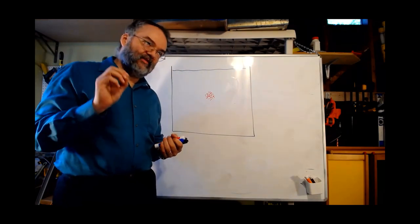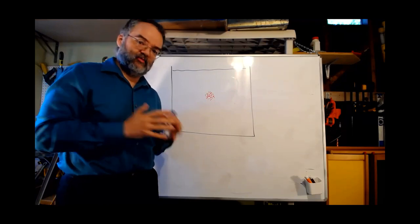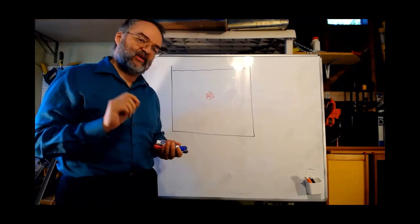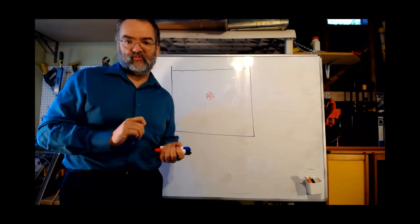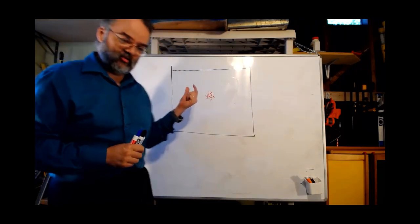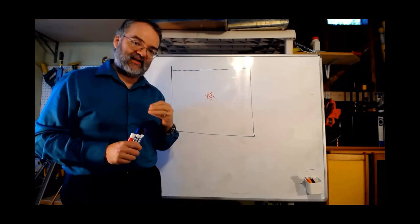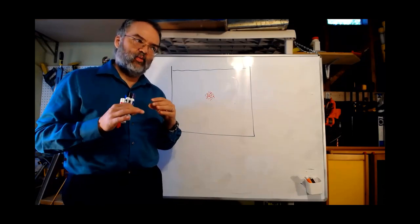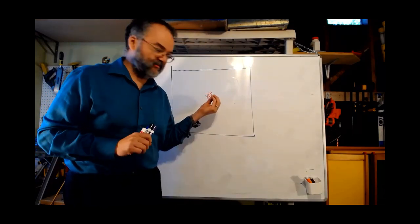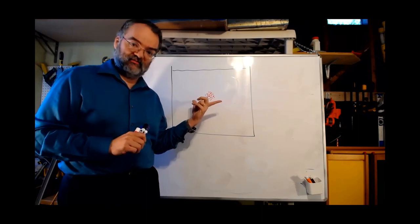The most common answer is that things want to move from where there's more to where there's less. But we want to make sure we don't use that kind of anthropomorphization. These are molecules — they don't want anything. Let's see if we can get at the underlying reasons why we can be almost sure that this will spread out over time.